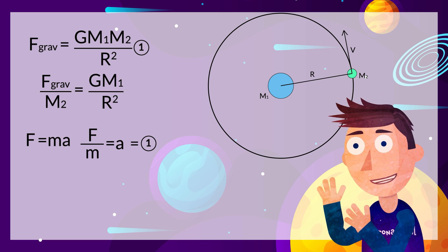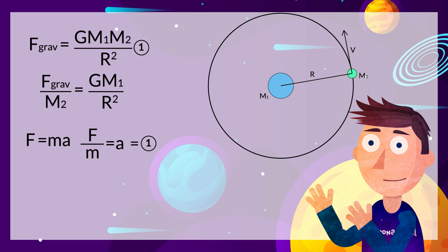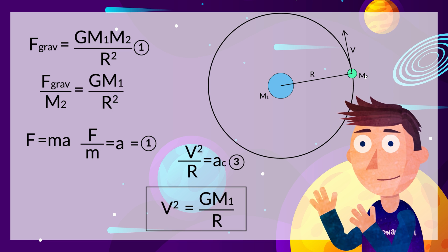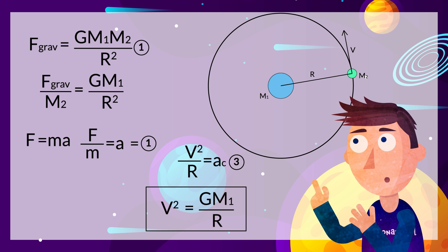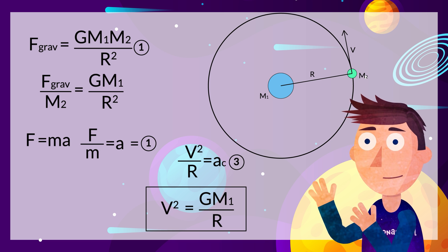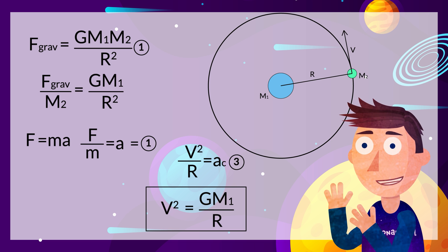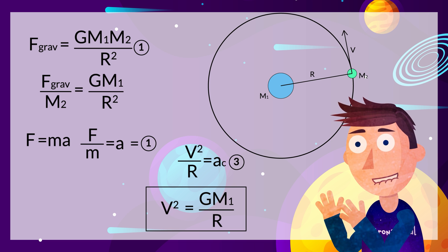Now a third equation that also applies to this case is that of centripetal acceleration from high school kinematics. This means that the acceleration of the object in orbit is the square of its velocity over the radius of the orbit.